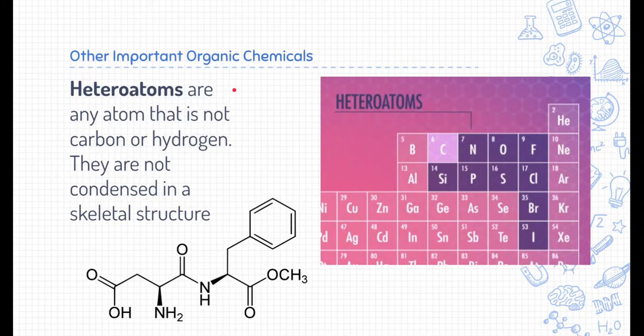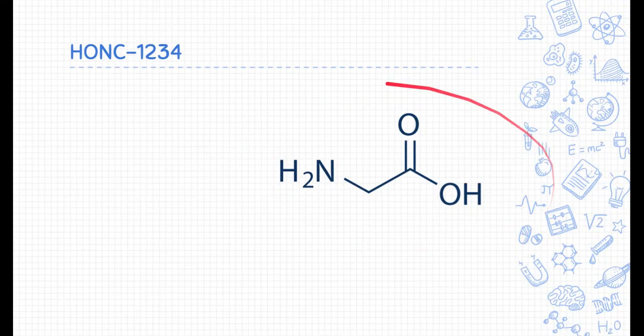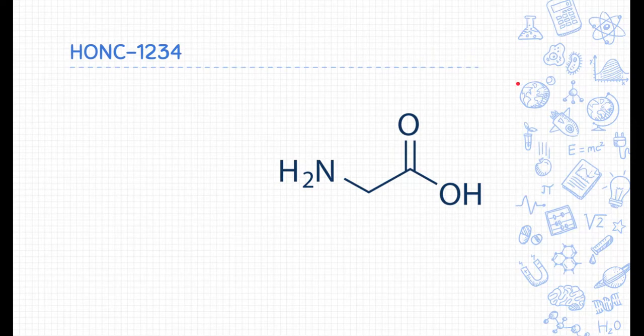Other things to know about in organic chemicals and models is heteroatoms. Heteroatoms are any of the atoms that are not carbon or hydrogen. We have to write these atoms in the skeletal structure because we can't be lazy about those. In order to help us understand structures a little bit better and those heteroatoms, one good rule to remember is the HUNK1234 rule. These represent how many different bonds common elements make in organic compounds.